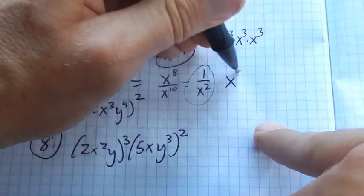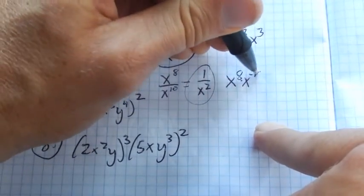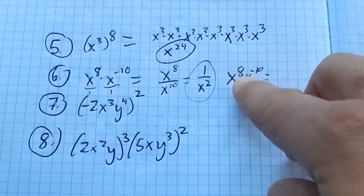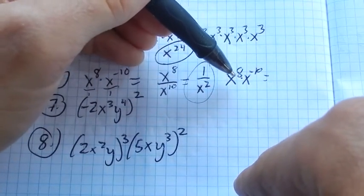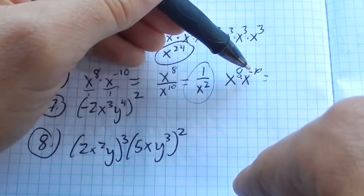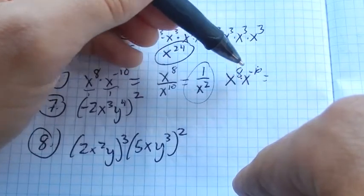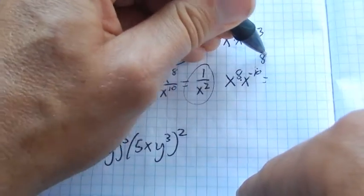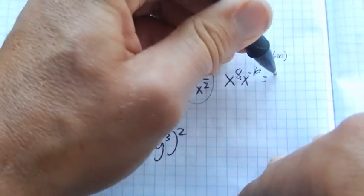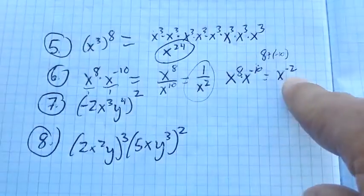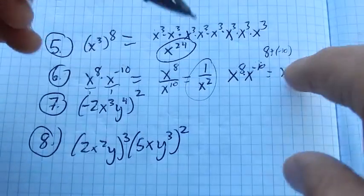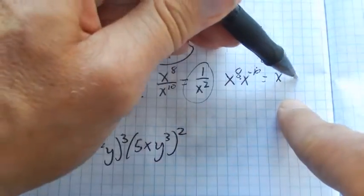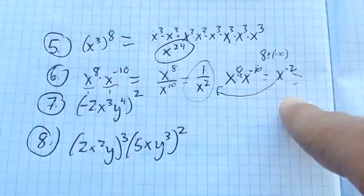Another way to think about this one is, some of you will remember, we have an exponent times an exponent. We can just add these together. We have 8 of them, then we have negative 10 of them. So 8 plus negative 10 is negative 2. x to the negative 2, which is the same as this. But remember, our direction said positive exponents only. So then we could rewrite this as that.